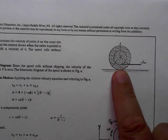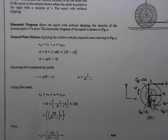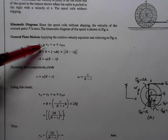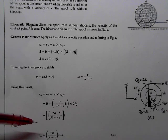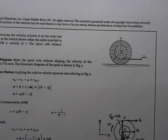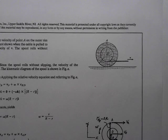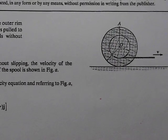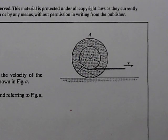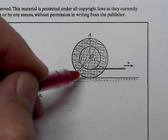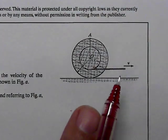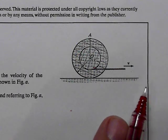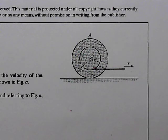The second problem involves a disk. We have a wheel rolling on the ground without slipping, and attached to the wheel is a smaller diameter section. Wrapped around that smaller diameter section is a rope. The rope comes out and we are applying a force to it, pulling with a velocity V. The question is: what is the velocity of various points on this body, in particular point A out on the outer rim?